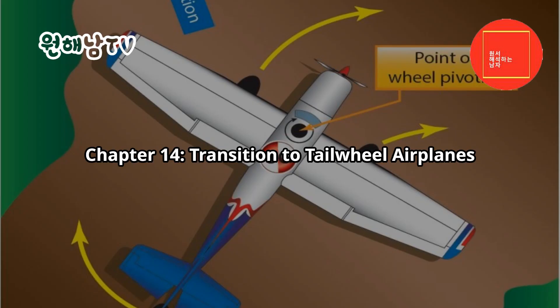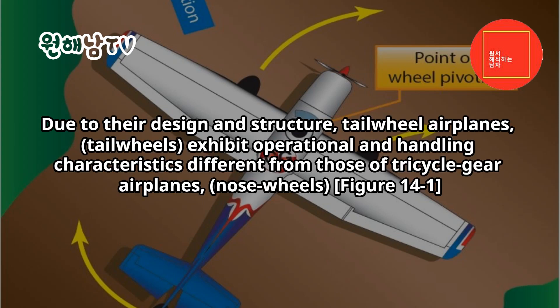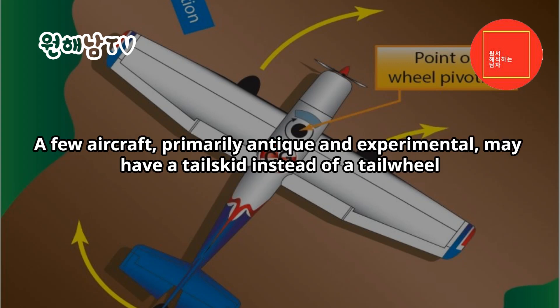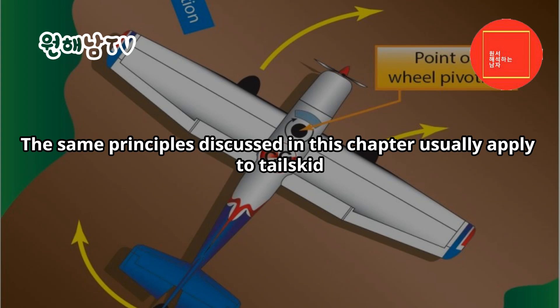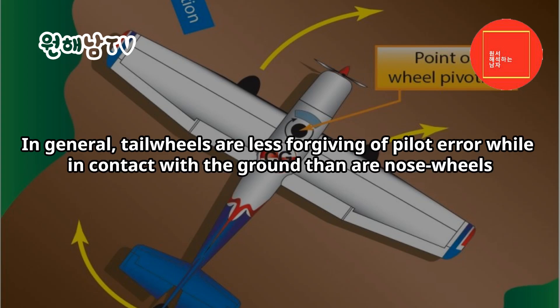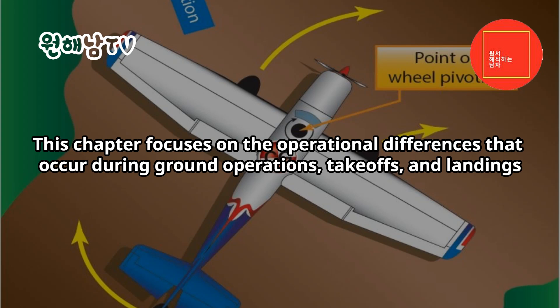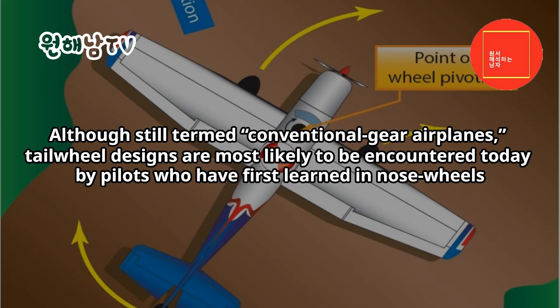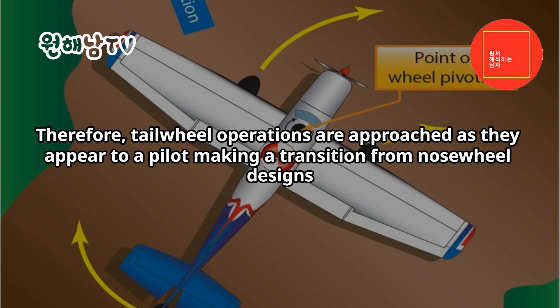Chapter 14: Transition to Tailwheel Airplanes. Due to their design and structure, tailwheel airplanes exhibit operational and handling characteristics different from those of tricycle gear airplanes. A few aircraft, primarily antique and experimental, may have a tailskid instead of a tailwheel. The same principles discussed in this chapter usually apply to tailskids. In general, tailwheels are less forgiving of pilot error while in contact with the ground than nosewheels. This chapter focuses on the operational differences that occur during ground operations, takeoffs, and landings. Although still termed conventional gear, tailwheel designs are most likely to be encountered today by pilots who have first learned in nosewheels. Therefore, tailwheel operations are approached as they appear to a pilot making a transition from nosewheel designs.